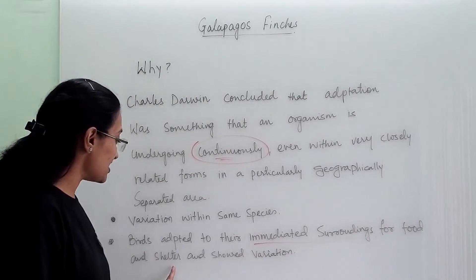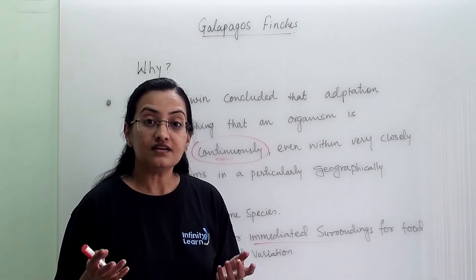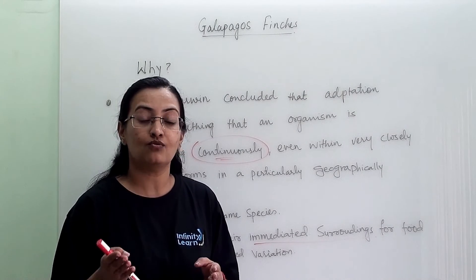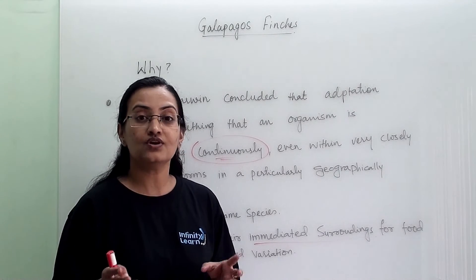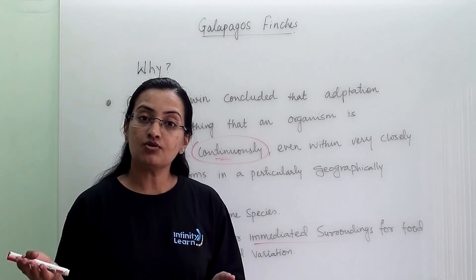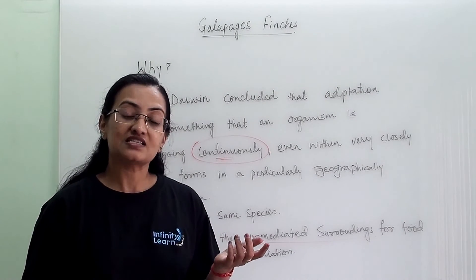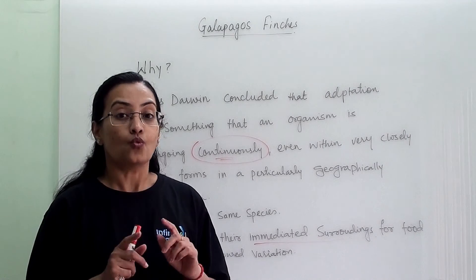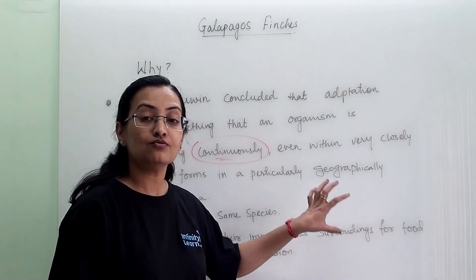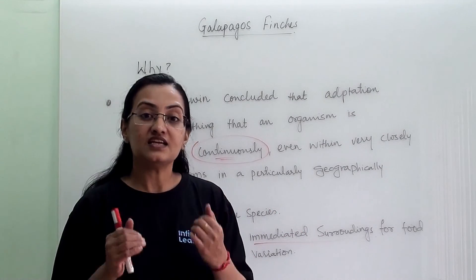The finches showed variation based on their surrounding food and shelter. For example, finches staying near meadows started eating insects because they found insects in plenty, so they adapted sharp and long beaks to catch insects easily and survive in that region. On the other hand, finches living where there were plenty of fruit trees adapted stubby beaks to eat fruit easily. They adapted to their immediate surroundings so that whatever food was available, they could access it and survive.